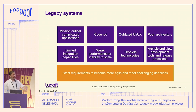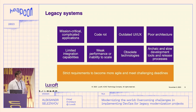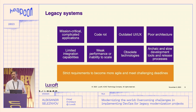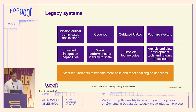Specifically about legacy — the applications we deal with have common ground and similarities. They are always huge applications, very important for the business, with a history of 30 to 40 years of constant engineering. When we start working on them, there are always issues like code rot, bad UI/UX, and bad integration capabilities. The common need is that the business wants to make those applications more agile and fast.